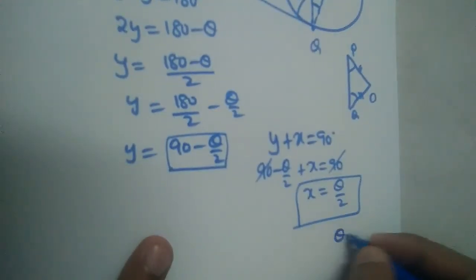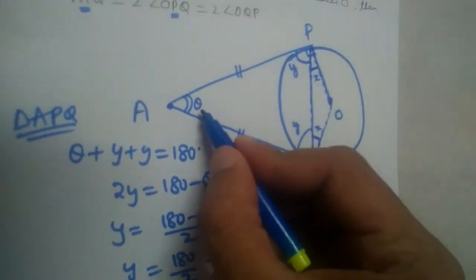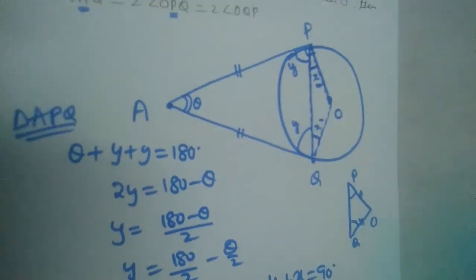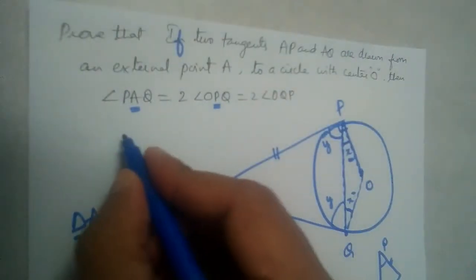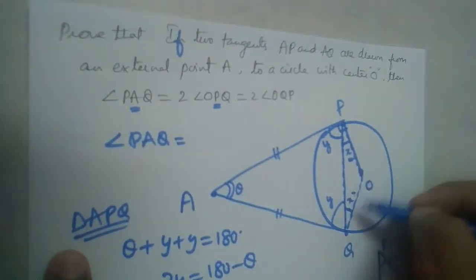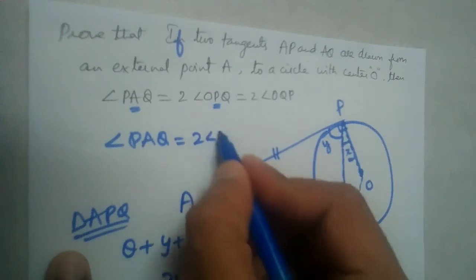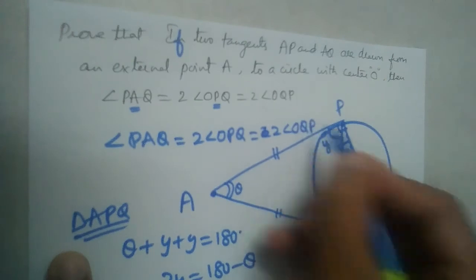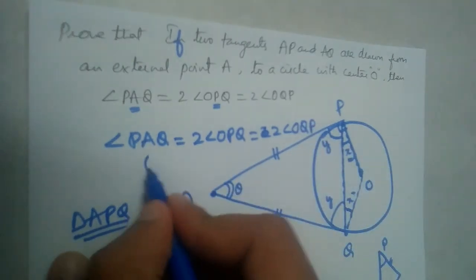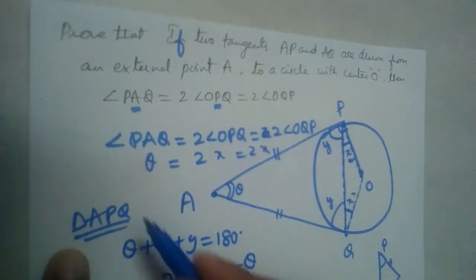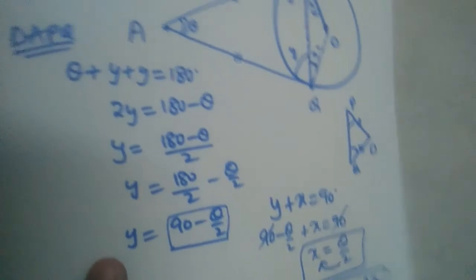From x equals theta by 2, we can say theta equals 2x. That is exactly what we needed to prove: angle PAQ is twice angle OPQ, and twice angle OQP. We took angle PAQ as theta and angle OPQ as x, so theta equals 2x. Hence proved.